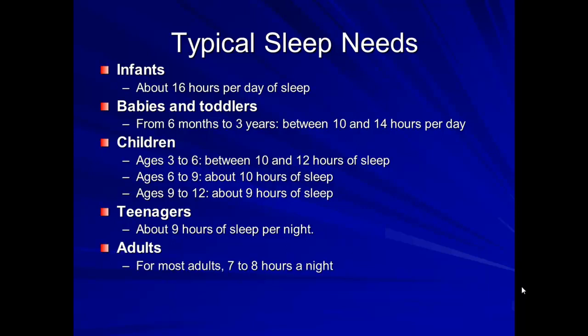Most adults need seven to eight hours. If you think you're fine on four or five hours — most adults actually need seven to nine hours to function at their best. Can you get by on less? Yes, but your brain is not doing its best work. There are a very few people who genetically only need four to five hours — researchers have identified a gene related to this — but most people don't have it, and claiming otherwise is just rationalizing your lifestyle.